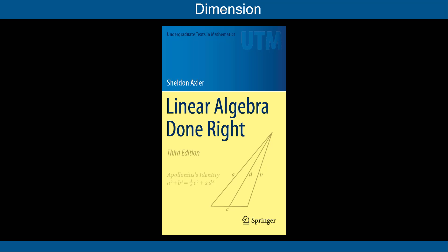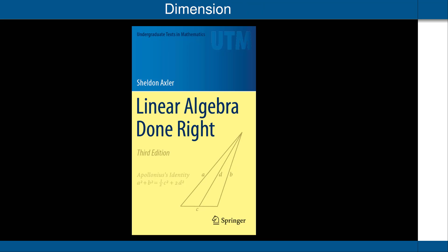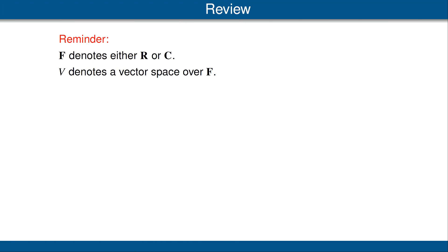Hello, I'm Sheldon Axler, the author of Linear Algebra Done Right. This video discusses the section of the book titled Dimension. Let's begin with a quick review. F denotes either the scalar field R of real numbers or the scalar field C of complex numbers, and V always denotes a vector space over F.